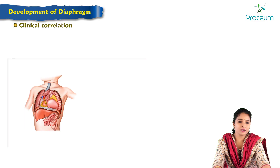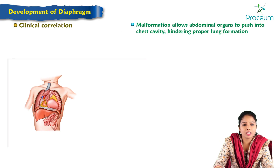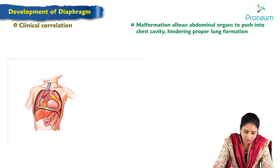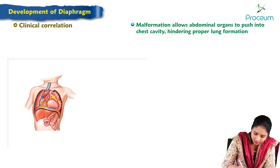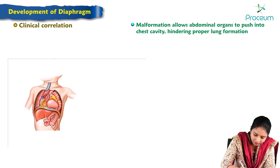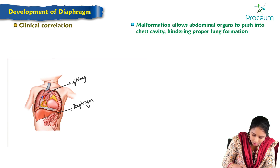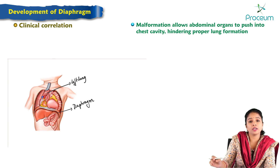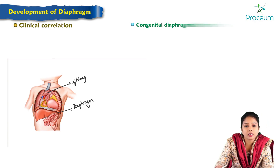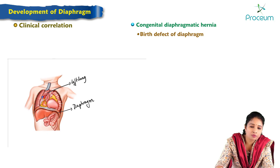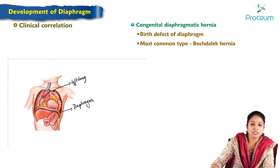Moving on to clinical correlations and congenital anomalies. Malformation of the diaphragm allows abdominal organs to push into the chest cavity, hindering proper lung formation. In this image, we can see part of the stomach and intestines protruded into the thoracic cavity, where the left lung is not formed properly. This abnormal protrusion of intestines into the thoracic cavity is called congenital diaphragmatic hernia.